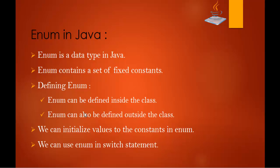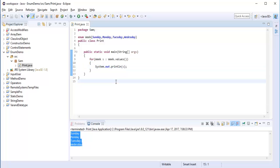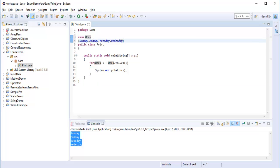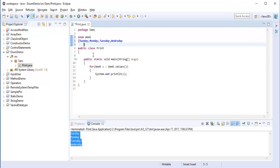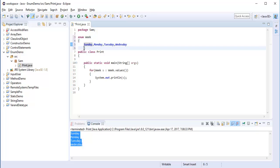I showed you that we can define an enum in two ways — inside the class and outside the class. Now we can also initialize our values to the enum. Let me show you how. Let me jump back to Eclipse. Here I have the week enum. I want to initialize values to each constant.